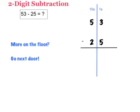Let's try this again. I'm going to try 53 minus 25 to find the answer. I lined up my tens and my ones, 53 minus 25. We start with the ones place, let's check our rule: more on the floor, go next door. I'm going to circle the bigger number.